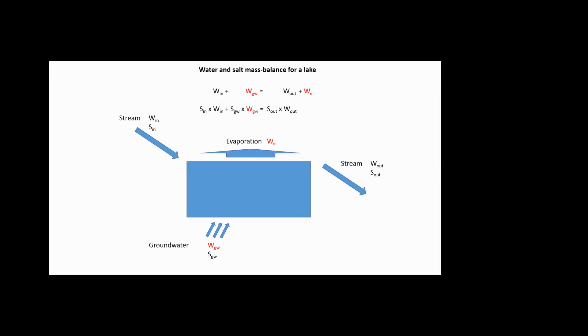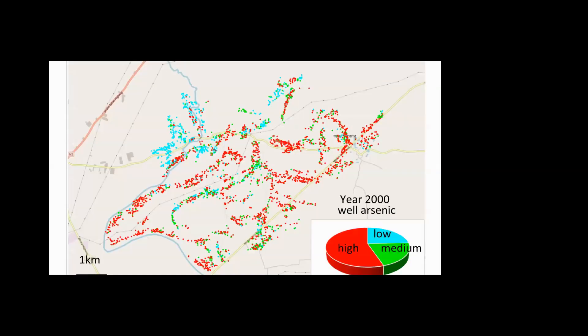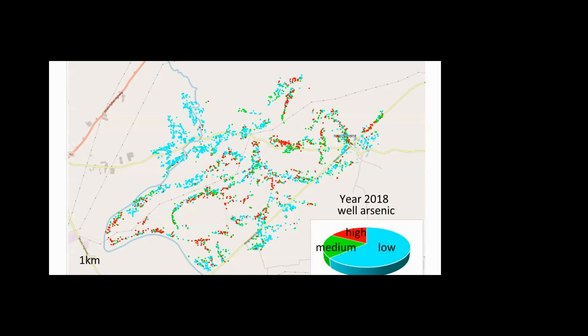This was the arsenic exposure in 2000. The happy news is that today the same people are drinking water indicated by a new map showing a significant expansion of the safe portion and shrinking of the unsafe portion. Questions remain about why not everybody has switched to safe water — those are the types of questions we continue to study, including with economists thinking about behavior. That's all I have to say. Thank you.